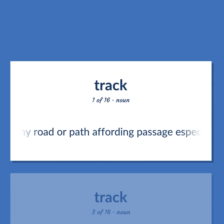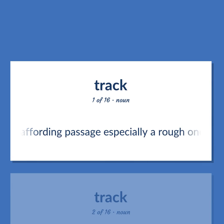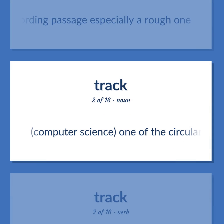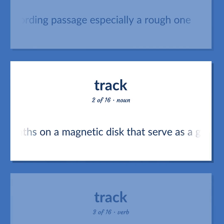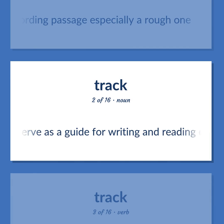Track: Any road or path affording passage, especially a rough one. Computer Science: One of the circular magnetic paths on a magnetic disk that serve as a guide for writing and reading data.